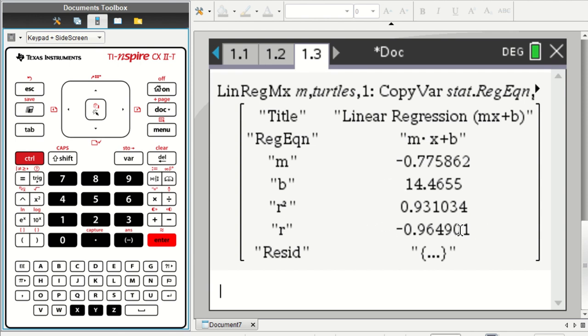What is new and kind of important is this number here, the value for R. R squared is the square of that value, but the value R we call Pearson's correlation coefficient.